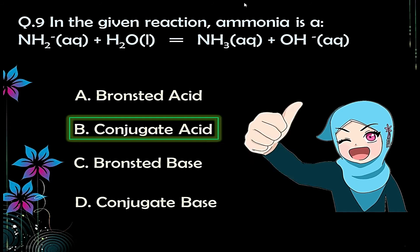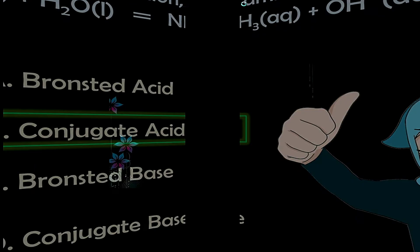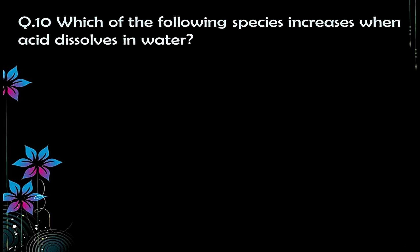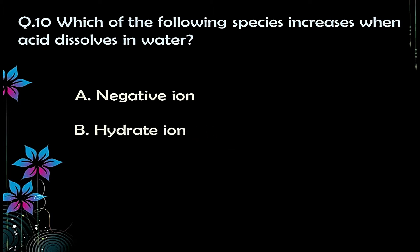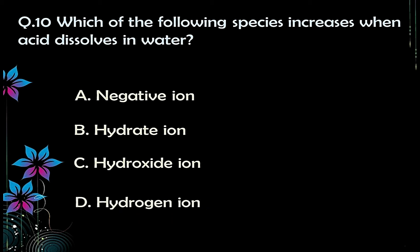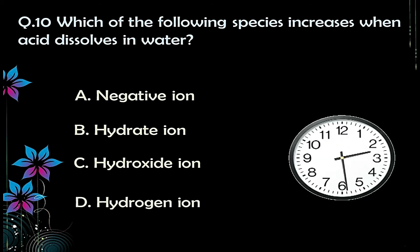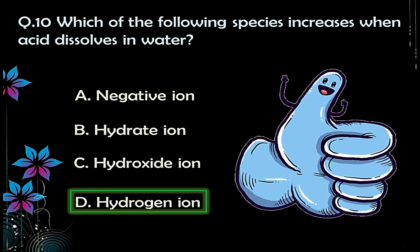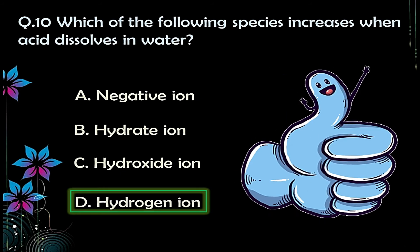Question number ten: which of the following species increases when an acid dissolves in water? Options: A) negative ions, B) hydrate ions, C) hydroxide ions, D) hydrogen ions. This is a simple question. The correct answer is option D — hydrogen ions — because acids contain hydrogen ions, so when they dissolve in water they break down into hydrogen ions or hydronium ions.